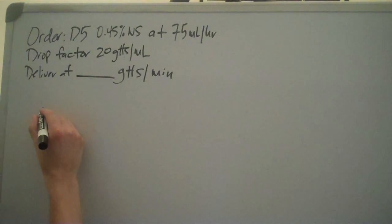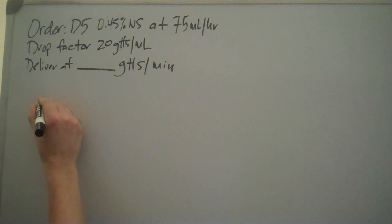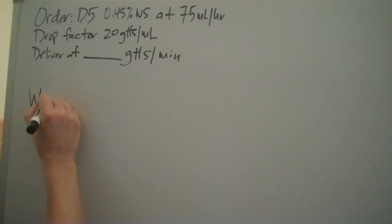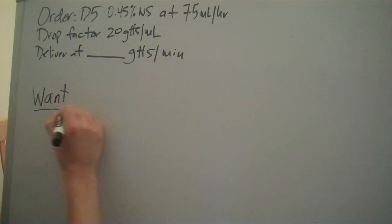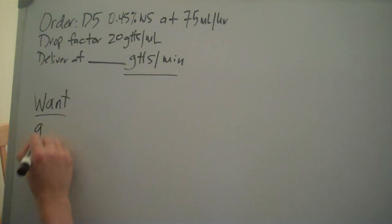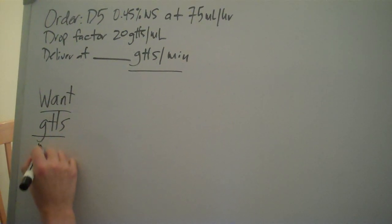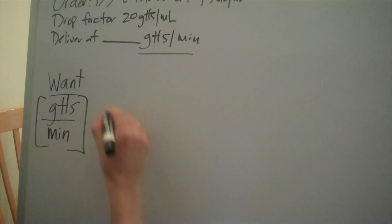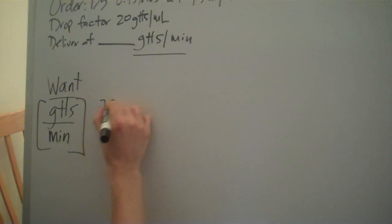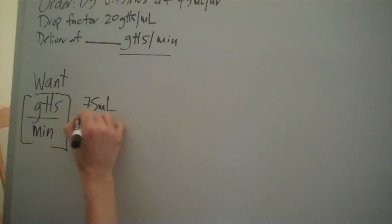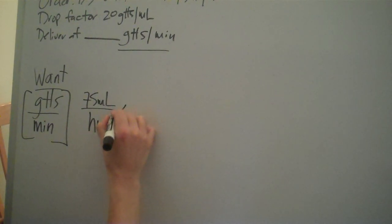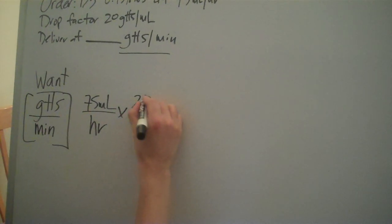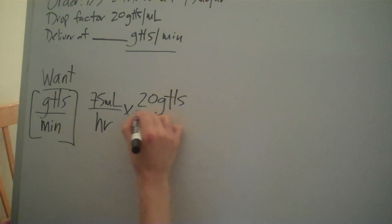We're going to use everything that we're given, and you want to make sure that you cancel out like terms. But first, figure out what you want. We want drops on top over minutes. Here we have 75 mLs, our infusion rate, over an hour. And we're also given our drop factor: 20 drops per mL.